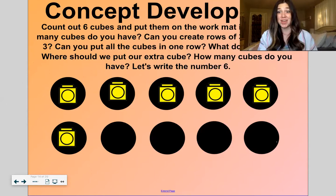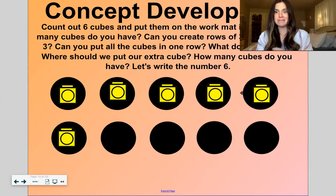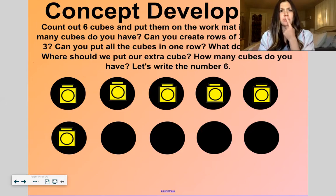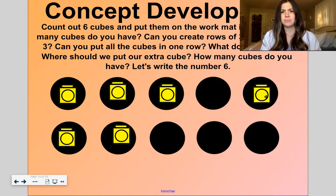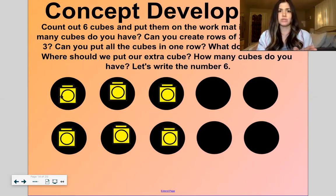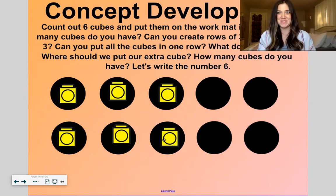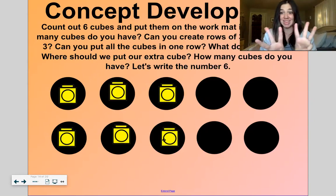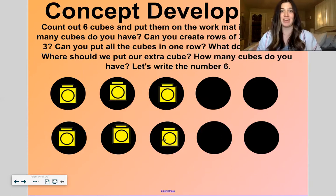We have six. Six cubes. Five in one row. One in the other. That gives me six. Can we create rows of three? Three. Let's see. I have two rows of three now. Three and three make six. That's a double fact.